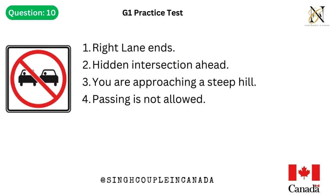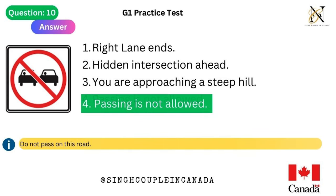Question 10. This traffic sign means: 1. Right lane ends. 2. Hidden intersection ahead. 3. You are approaching a steep hill. 4. Passing is not allowed. Answer is 4. Passing is not allowed — do not pass on this road.